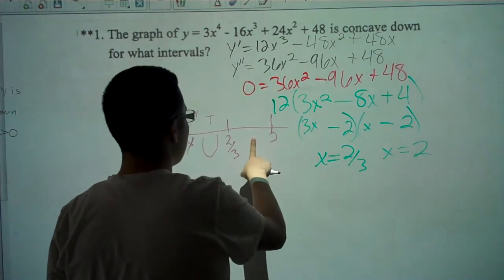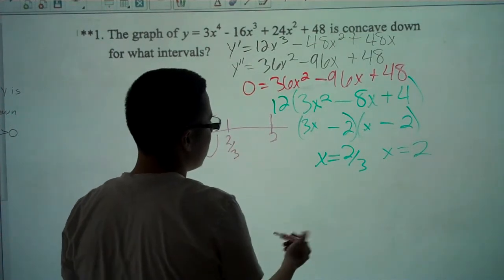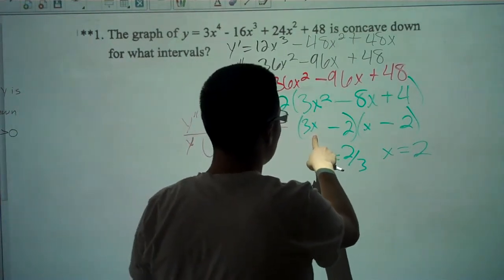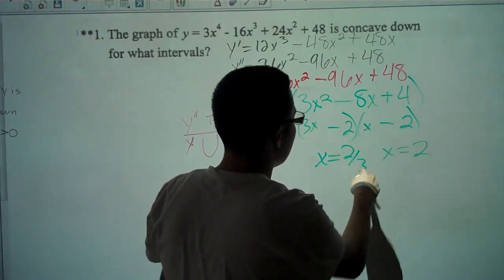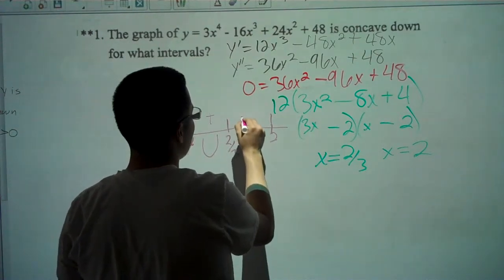Now we're going to plot a point between 2 thirds and 2 which is 1. We put 1 into x and these two will be 3 minus 2 which is positive, 1 minus 2 which is negative. Positive times negative is negative. So it's going to be concave down.